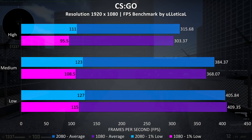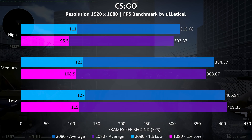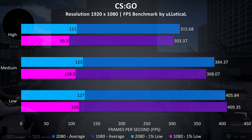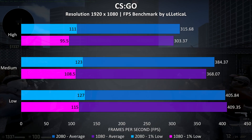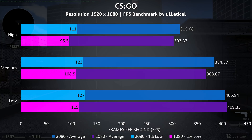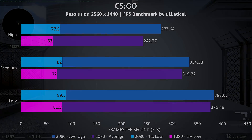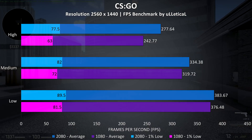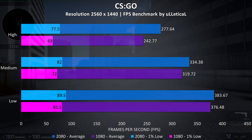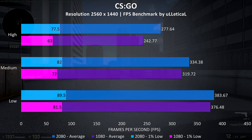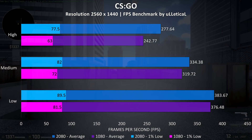CS:GO was tested with the Ulletical benchmark, and with all settings maxed out at 1080p there was only a small 4% improvement to the average frame rate, with a larger 16% improvement to 1% low, and not too much difference with lower settings. Going up to 1440p there was a larger 14% improvement to average FPS with max settings, as well as a 23% boost to the 1% low, and then lower improvements at lower settings, which seemed to be less GPU demanding.